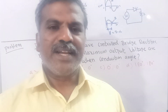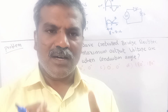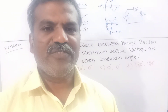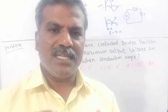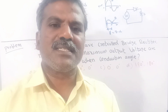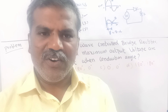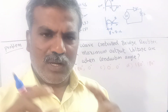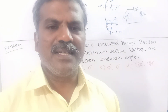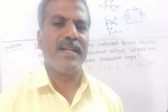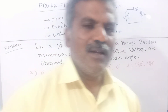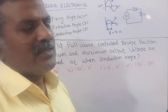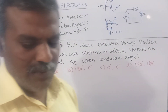So, firing angle: thyristor turn-on state angle. Thyristor on state is the conduction state. After the half cycle comes extinction — the thyristor total conduction angle gamma equals beta minus alpha.